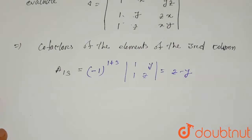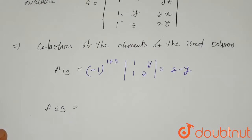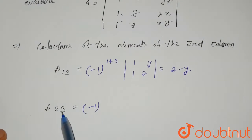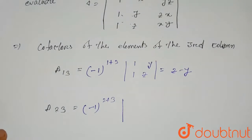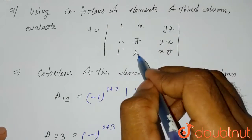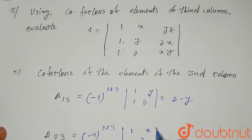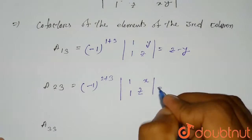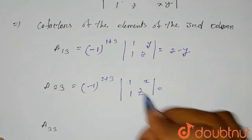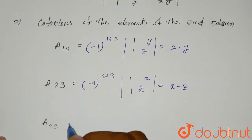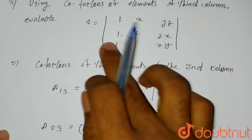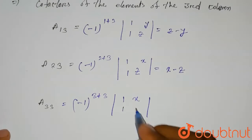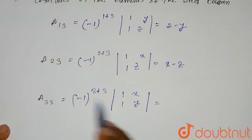Similarly, for A23: minus one to the power i plus j, where i plus j equals two plus three which is five — an odd number — so it will be minus one. Eliminating row two and column three gives one, z, x, one; so A23 equals minus one times (z minus x), which is x minus z. For A33: minus one to the power three plus three — an even power — so it's plus one. Eliminating row three and column three gives one, x, one, y; so A33 equals y minus x.